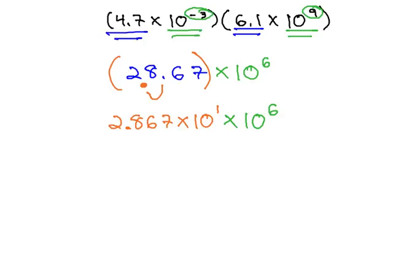We still have the times 10 to the 6th at the end. Now, we can combine this together by adding the exponents on the remaining tens, giving us 2.867 times 10 to the 7th power.